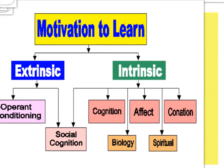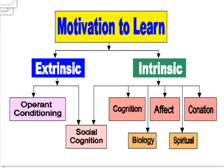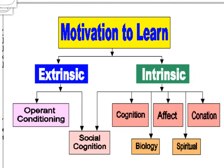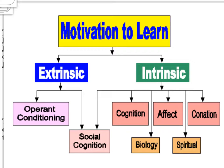Motivation is of two types: extrinsic and intrinsic. Operant conditioning supports extrinsic motivation — when we are motivated to perform a behavior to earn a reward or avoid punishment. Examples include studying to get a good grade, cleaning your room to avoid being reprimanded by your parents, participating in a sport to win awards, or competing in a contest to win a scholarship.